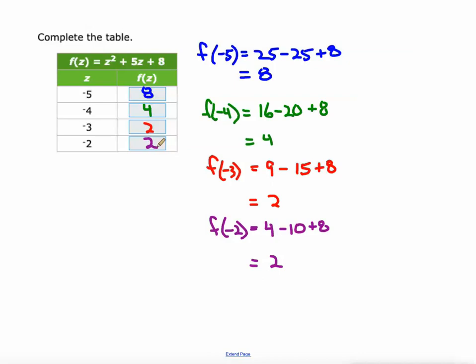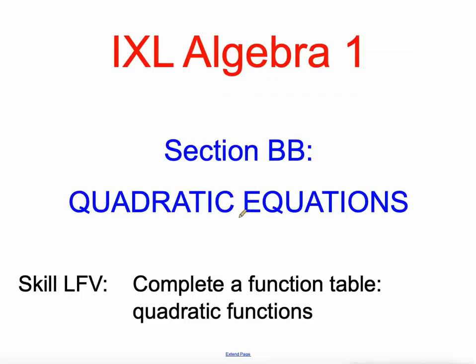So it looks like the vertex must be between negative 3 and 2 someplace. All right. So that'll get you going on completing a function table for quadratic functions. Skill number 3 in IXL section double B. Good luck.